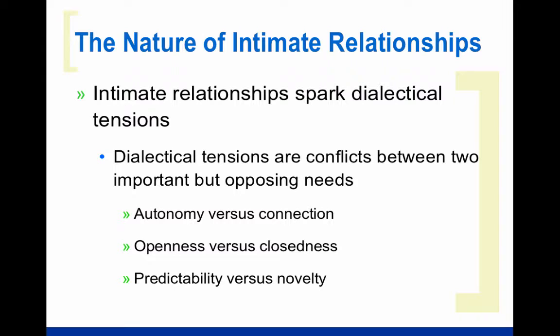Intimate relationships spark something called dialectical tensions — conflict between two very important but opposing needs. For example, autonomy, which is the feeling that you want to be your own person and have some independence, versus the desire and need to be connected to other people. Those two things can clash. You might want to have your own money that you can spend the way you want, versus having a shared bank account where you both have to discuss how that money is spent.